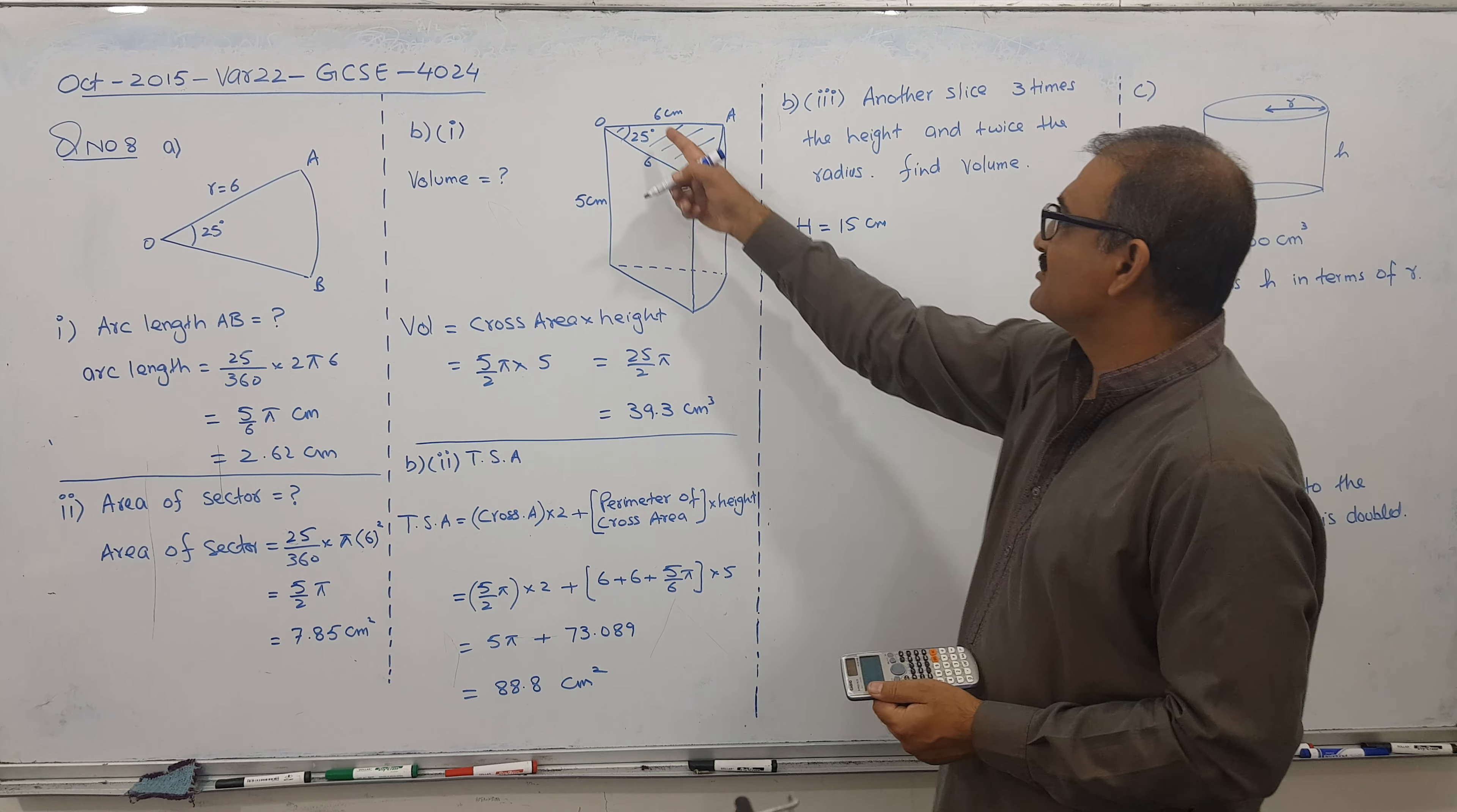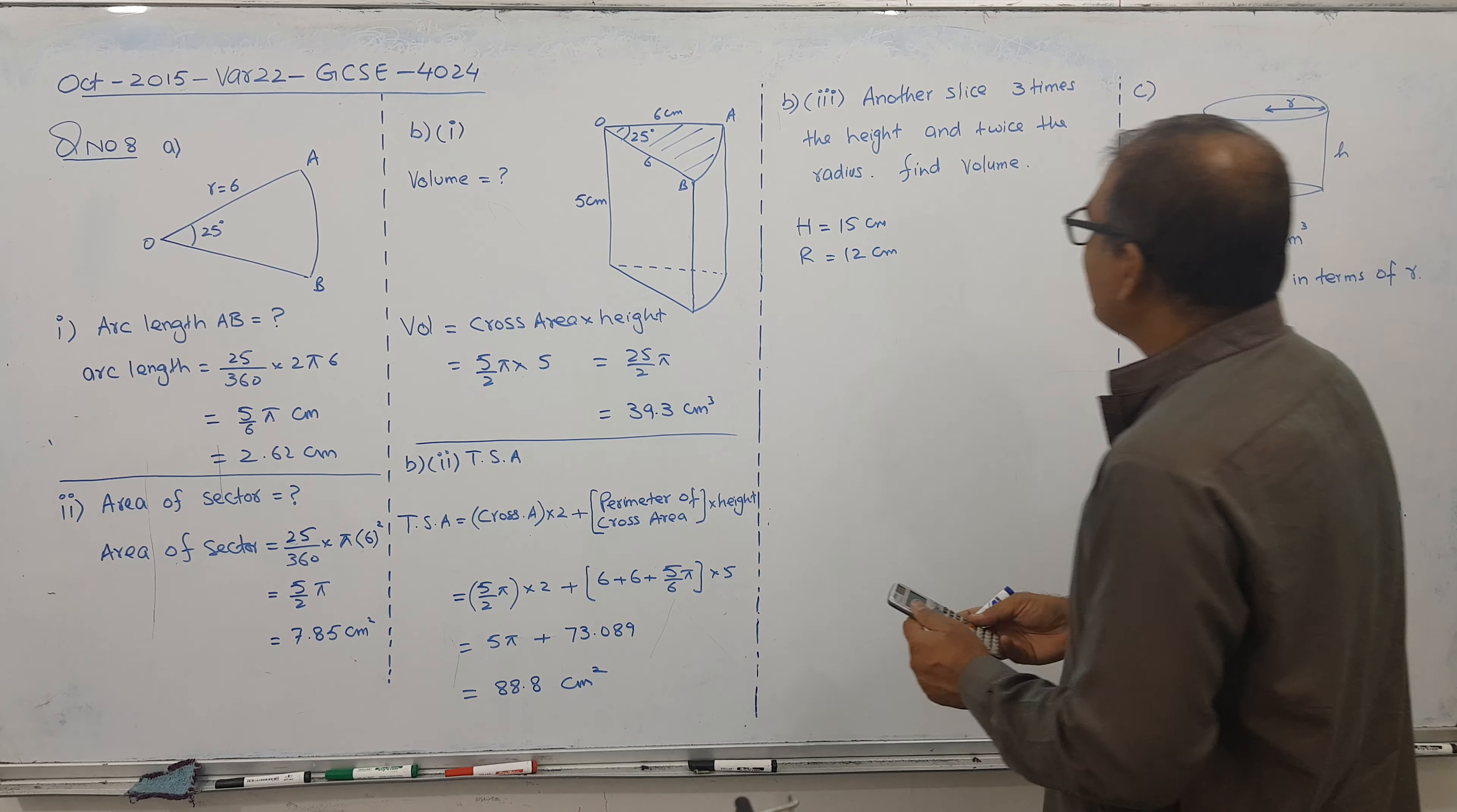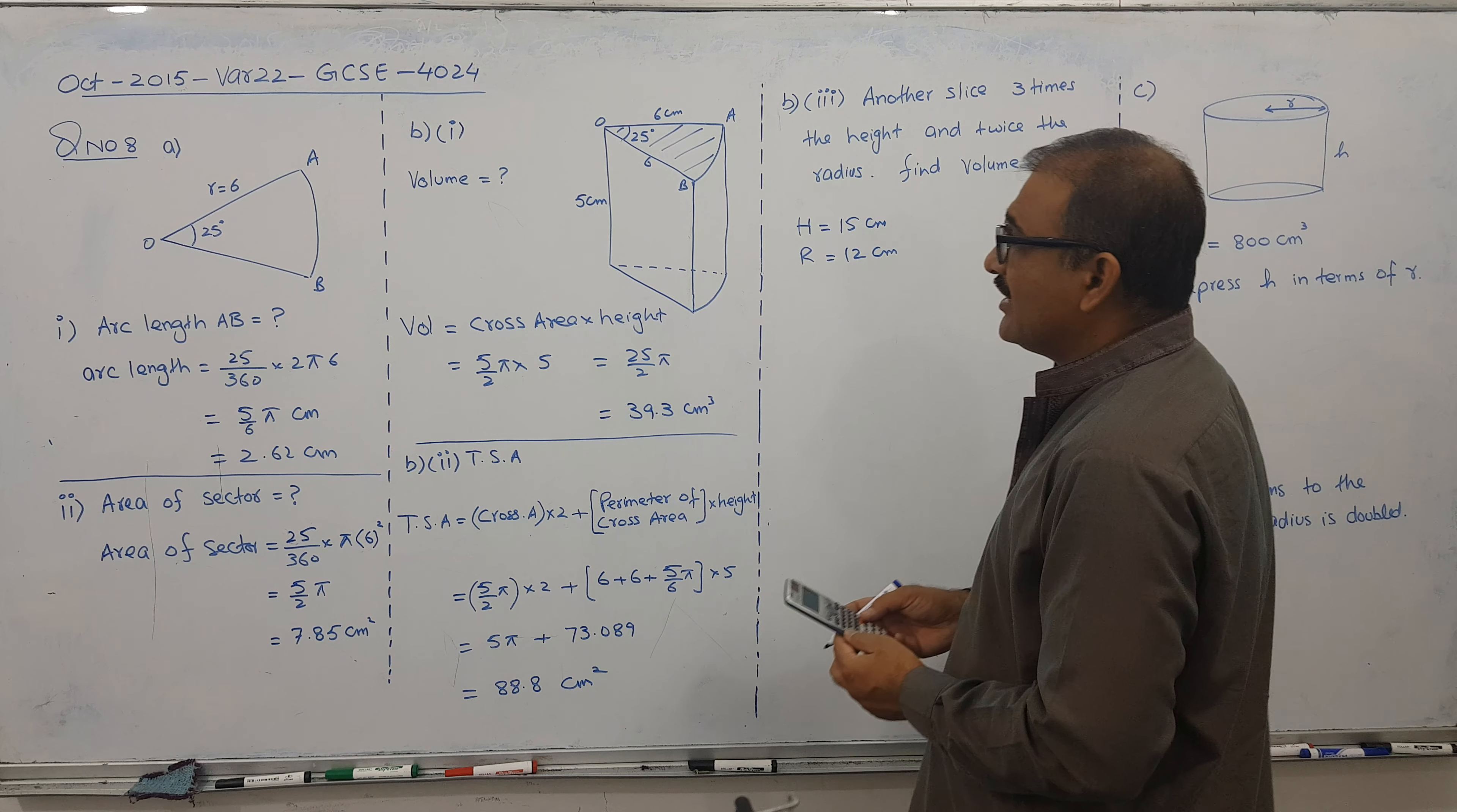So 3 fives are 15 centimeter. And height. And twice the radius. So this radius is twice. So radius is. I am writing twice. So 12 centimeter. And find the volume. So it is again easy thing. Not a hard job.